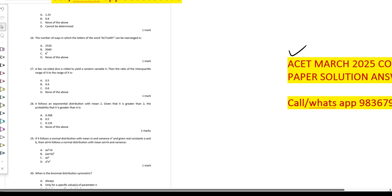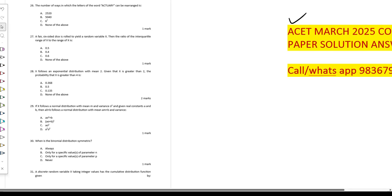So x follows the exponential distribution with mean 2, and x is greater than 2. Then find the probability of x greater than 4.